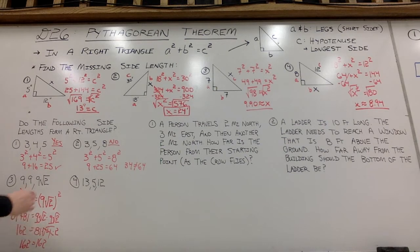So yeah, 162 equals itself. And this is actually a 45-45-90 special case, an isosceles right triangle.